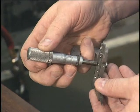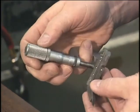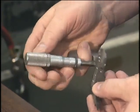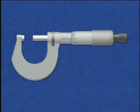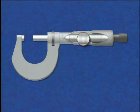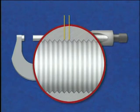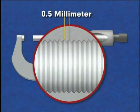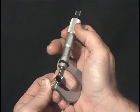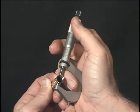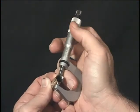Micrometers are produced in various precisions, both in metric and English units. In every case, it is the thread pitch of the spindle screw that makes each type different. The thread pitch is the distance between two adjacent thread crests. In this example, the thread pitch of the micrometer spindle screw is precisely one-half millimeter. Each revolution of the thimble moves the micrometer spindle one-half millimeter.